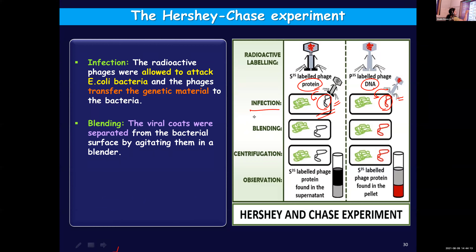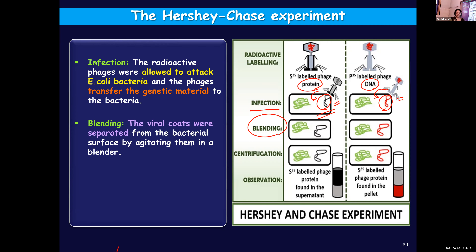The first stage is infection. The second step of the experiment was blending. Using a blender, this was mixed — the viral coats were separated from the bacterial surface by agitating them in a blender. After transferring the genetic material, the remaining substances — the outer coating — had to be removed. We are concerned only about the genetic material which has reached the bacterial cell, so remaining components were removed using a blender.